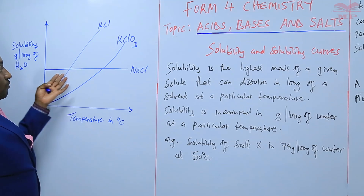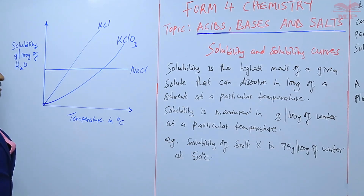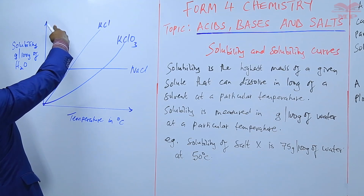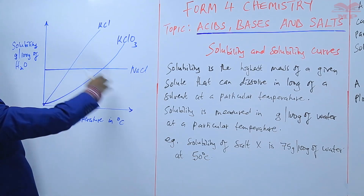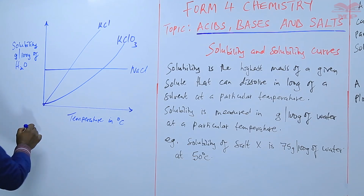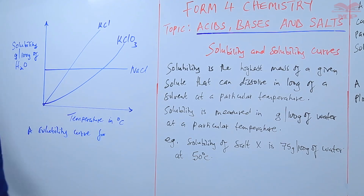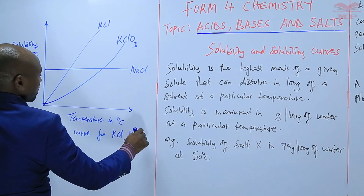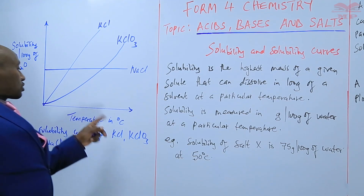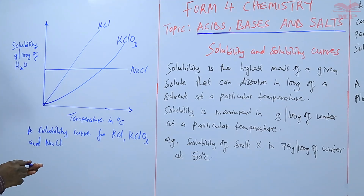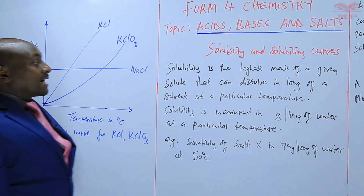We can also have a solubility curve for something like sodium chloride, whereby the solubility does not change much with respect to temperature — it tends to remain almost the same irrespective of temperature. Additionally, some salts show a decreasing solubility with increase in temperature, giving a descending curve. This is a solubility curve for potassium chloride and sodium chloride.